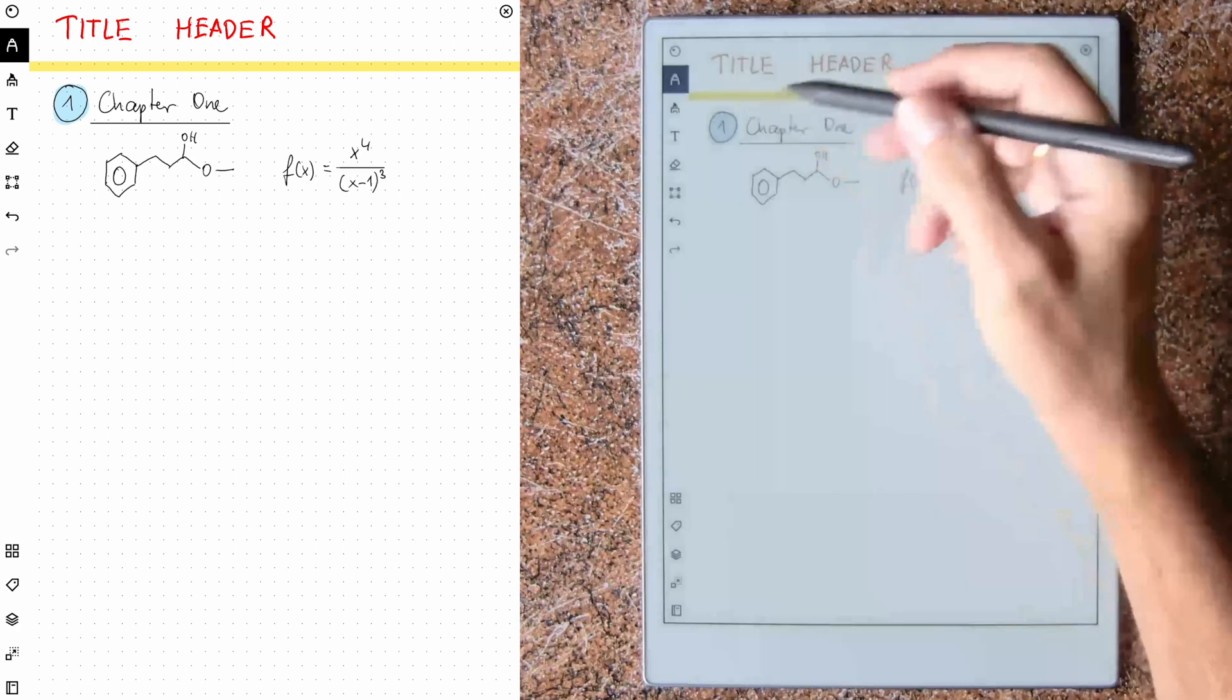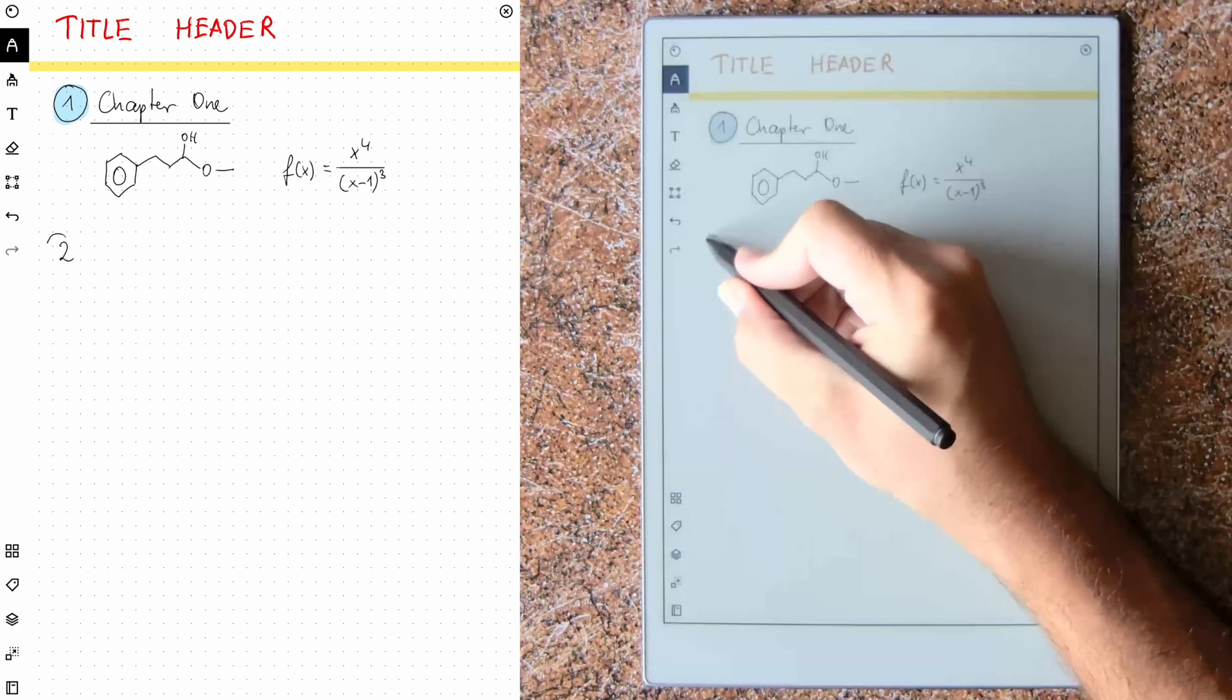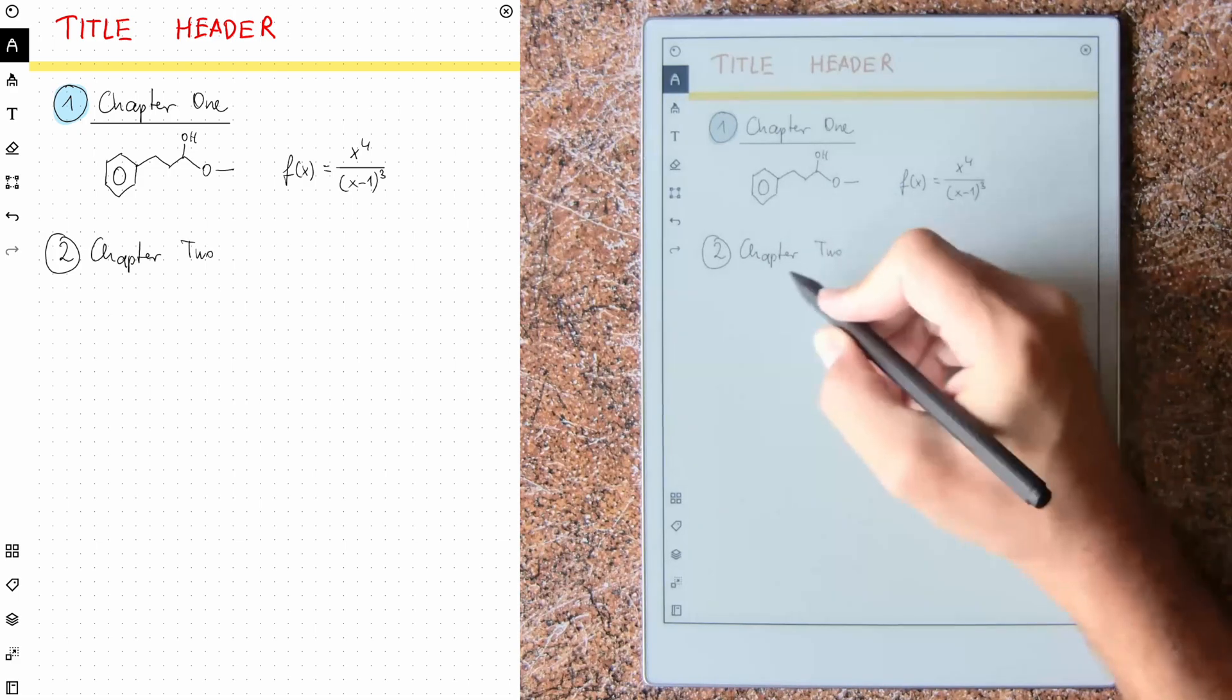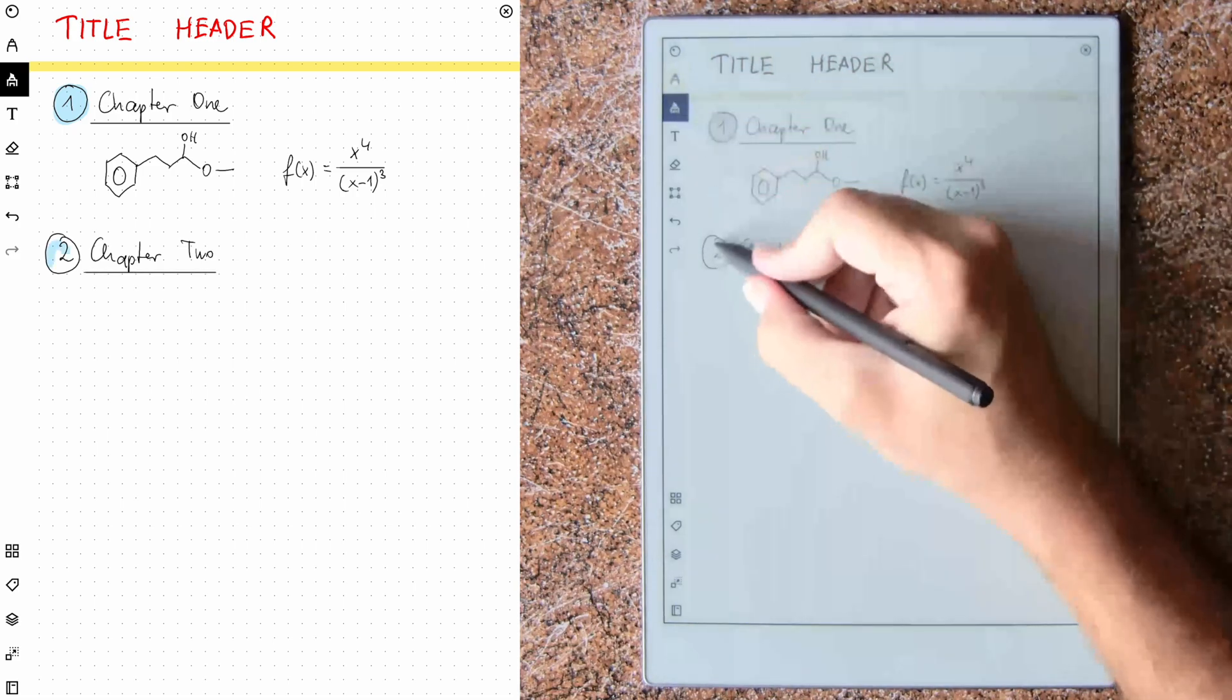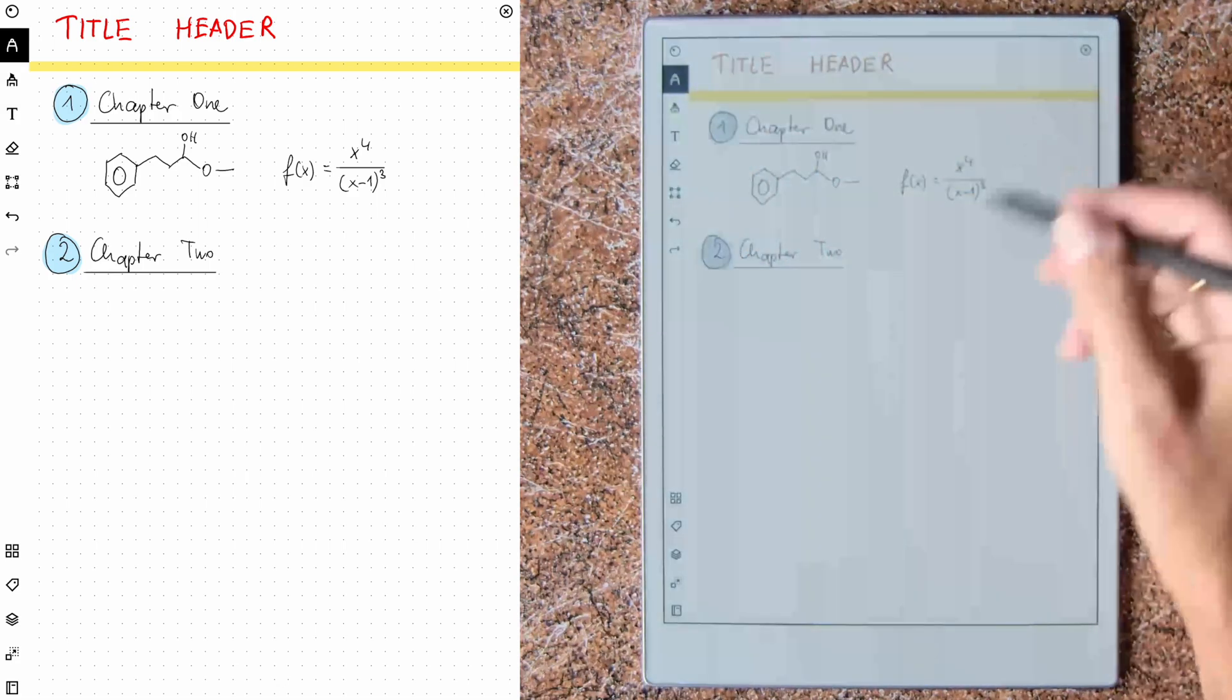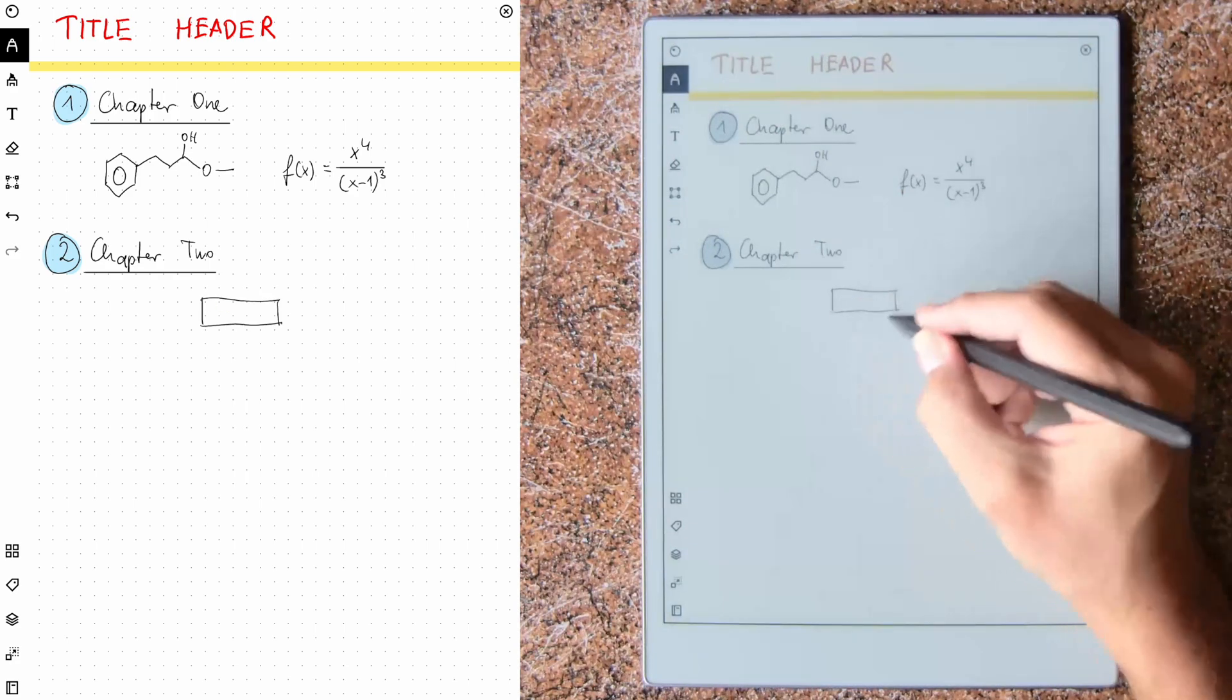And then, of course, you can also, because now I am creating here chapter two, this is now chapter two. So again, this underlining here and I use the highlighter and you see how this works on the screen.